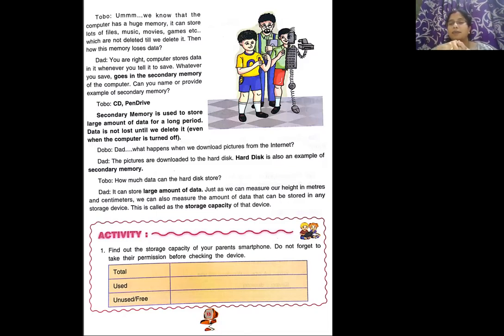Let us name some of the secondary memory examples. One basic thing, the memory which is fixed inside the computer's CPU, that is called a hard disk. So hard disk is also a secondary memory. Then comes your CD drives, your pen drives, your DVD drives. All these are secondary memory where you can save your data for longer period. So if I want to conclude, secondary memory is used to store large amount of data for long period and the data is not lost. It does not get deleted until we delete it by ourselves. Even if you switch off your computer, if you turn off your computer also, the data will not get deleted.